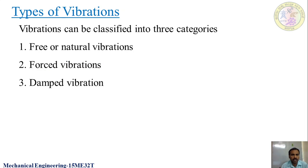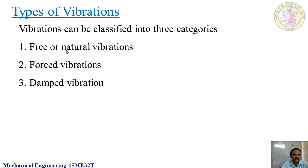In this session, as I said, we will discuss the various types of vibrations. Vibrations can be majorly categorized into three types: the first one is free or natural vibrations, the second is forced vibrations, and the third is damped vibrations. In the previous session I gave the definitions of these three vibrations; here we will see them in an elaborated way.